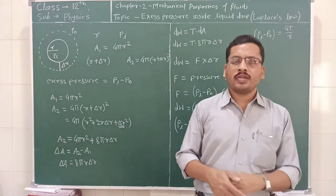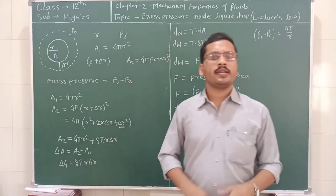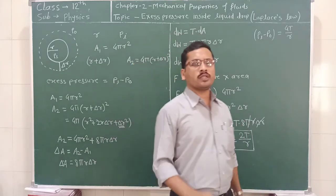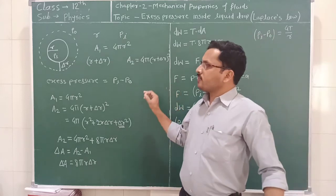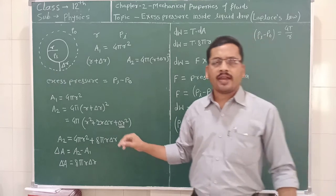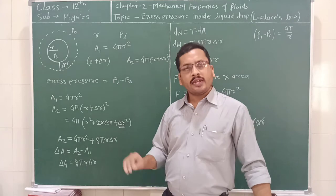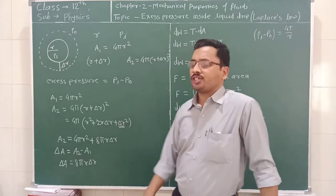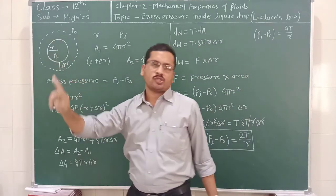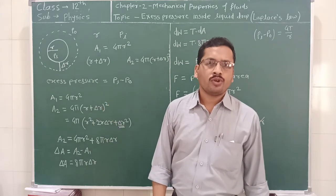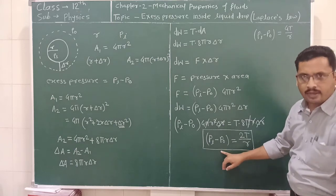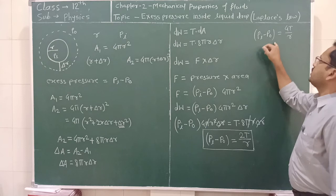Now we are going to see why the shape of the liquid drop or soap bubble is spherical in nature. It is spherical in nature because the forces due to the surface tension dominate over the gravitational force. We also know that surface tension decreases the surface area of the liquid. Why does this liquid drop and soap bubble not collapse? They do not collapse because the resultant of the excess external force and the forces due to the surface tension are smaller than the pressure inside the soap bubble or liquid drop. So, the excess pressure inside the liquid — also called Laplace's Law — gives us these two equations: one applicable for the liquid drop and one for the soap bubble.